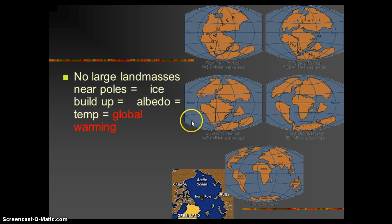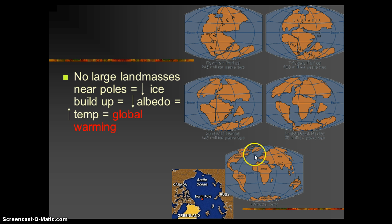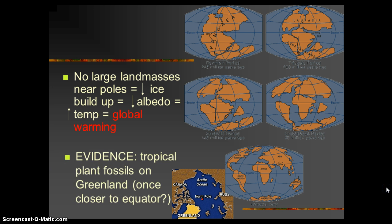On the opposite end, when we don't have large land masses near the poles, then we have less ice buildup, therefore less albedo, therefore an increase in temperature — and this can be a global warming situation. The visual here is Pangea, the single continent, as it broke up and the continents shifted. Evidence of this motion includes tropical plant fossils found on Greenland, indicating it was once closer to the equator.